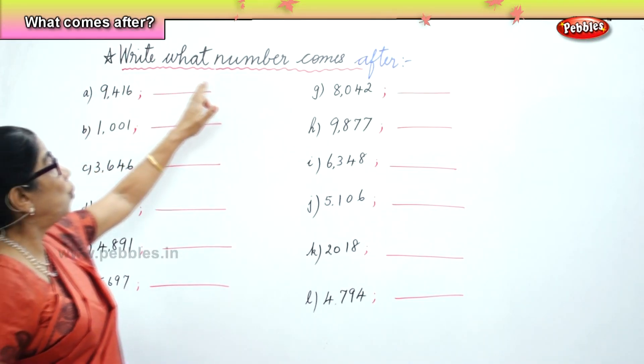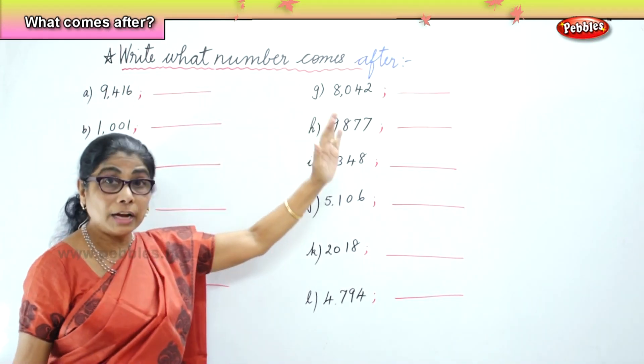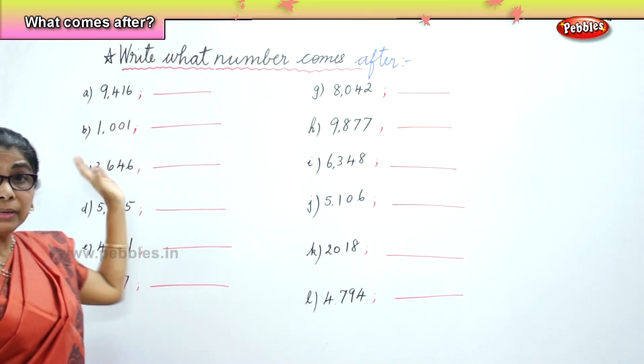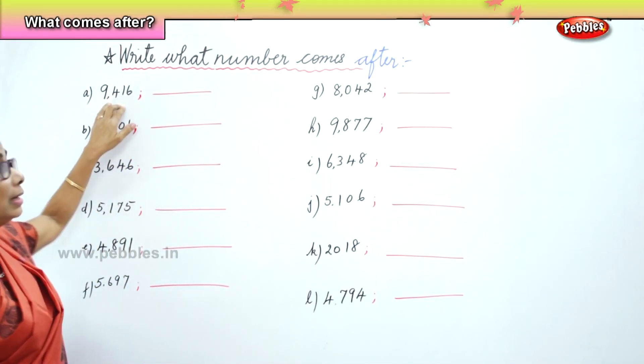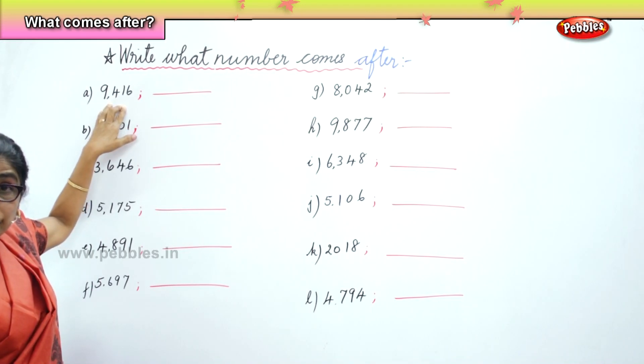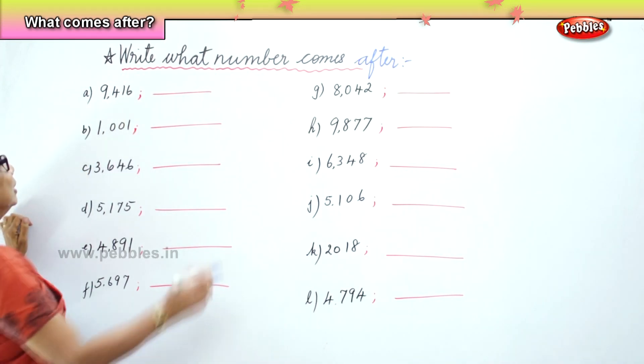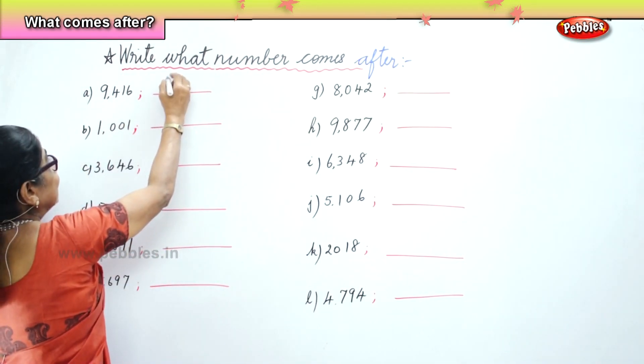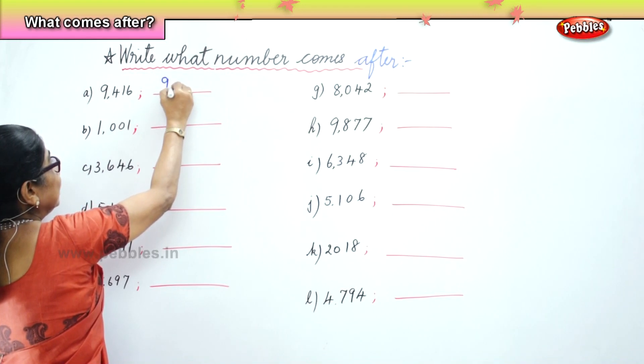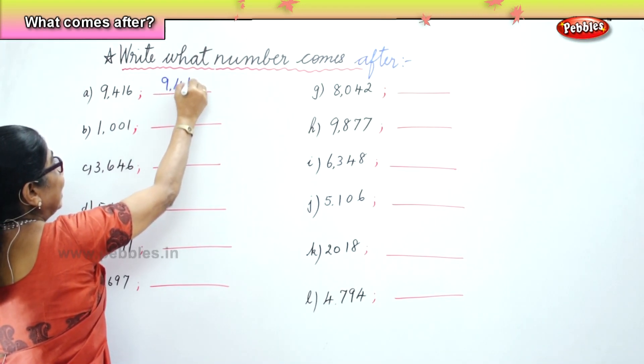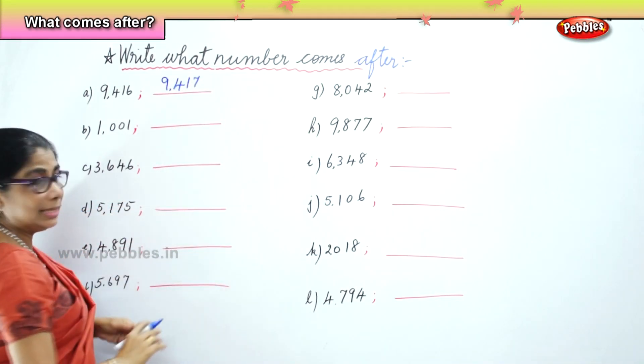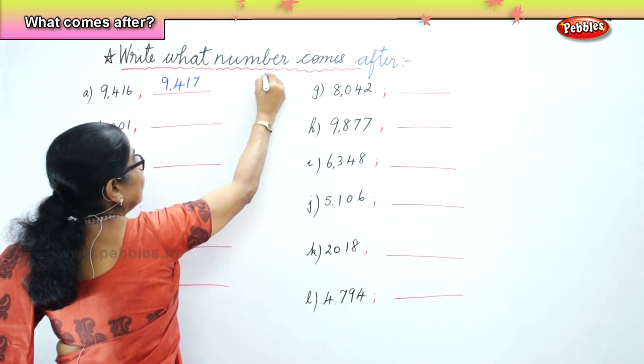Write what number comes after. So I've given you one number. You try, write what comes after. 9,416. What's the number that comes after? 16, 17. So your number is 9,417. Very good.